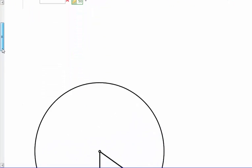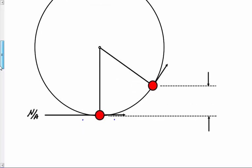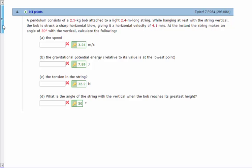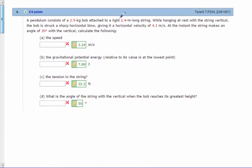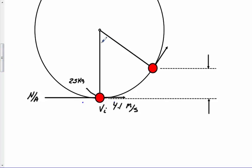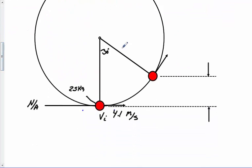I've gone ahead and drawn a picture of what's taking place here. I'm going to write my velocity initially. It's 4.1 meters per second. I'll come down here and make this velocity be 4.1 meters per second. That's going to be my velocity initial. This bob has a mass of 2.5 kilograms, and the angle relative to the vertical is going to be 30 degrees. And the length of the string is 2.4 meters.